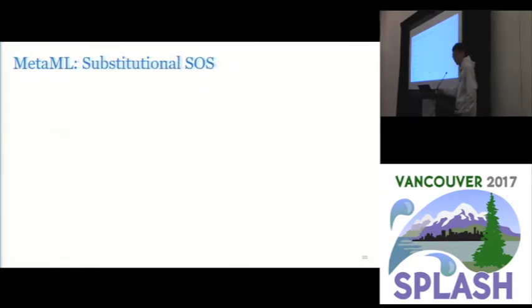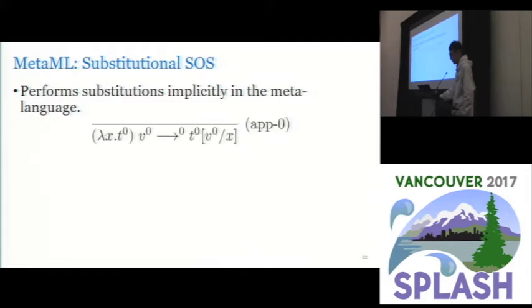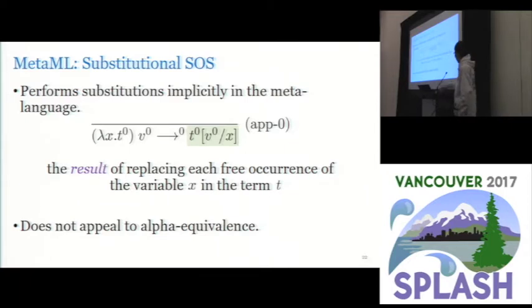So regarding our reference semantics, it performs substitutions implicitly in the metalanguage. So this is an application rule which is quite usual. And the highlighted part shows the result of performing such a substitution so it doesn't take any additional step. Our goal is to develop an environmental abstract machine which should correctly manage variable names without appealing to alpha equivalence. So we make the same design choice here.